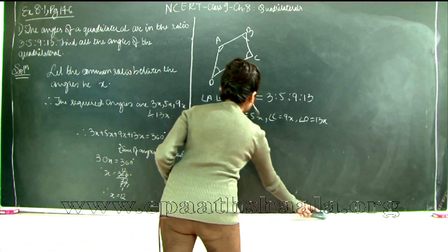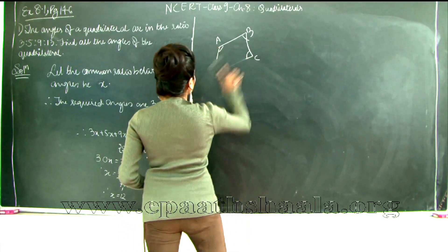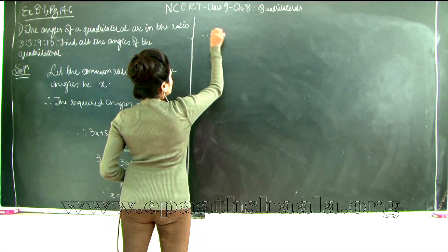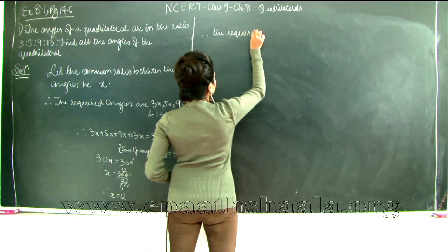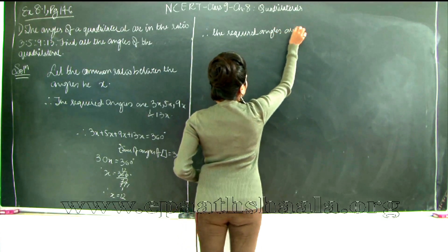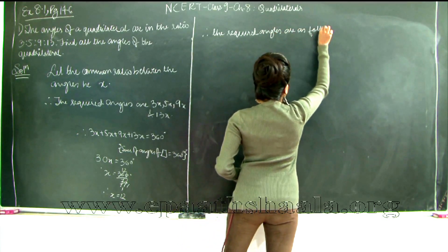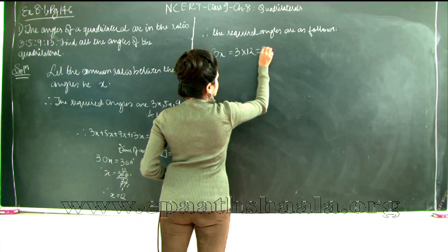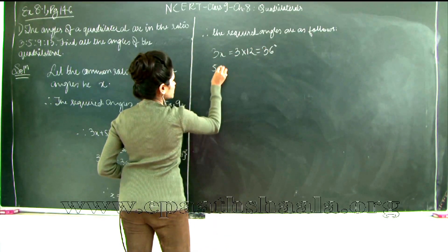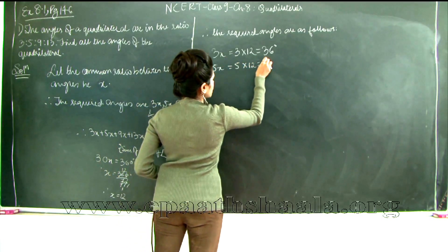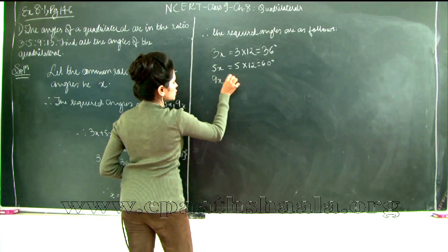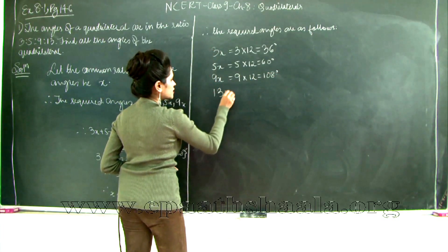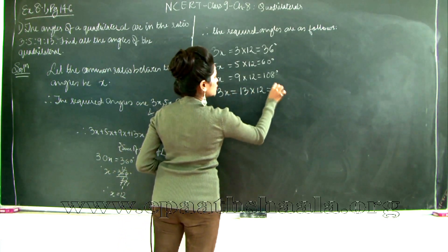So let's find our answers now. Therefore the required angles are as follows. We had 3x which is 3 into 12 which is 36 degrees. Then we had 5x which was 5 into 12 which is 60 degrees. Then you have 9 into x which is 9 into 12, 9 12s are 108. Fourth angle is 13x which is 13 into 12, so we know is 156 degrees.